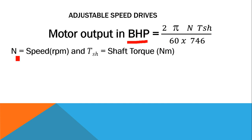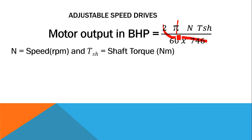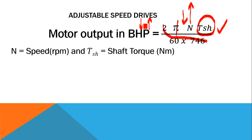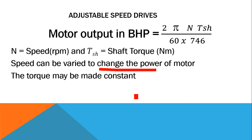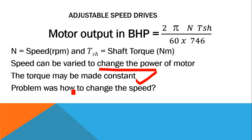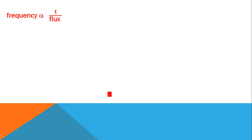In the BHP equation, 2, 60, 746, and π are all constants. So if we control torque to be constant and increase the speed, the BHP will also increase. There is a method where speed can be varied to control the power of the motor. We can control the shaft torque to be constant and vary the speed to change the power of the motor. The synchronous speed equation is N = 120F ÷ P, so the option is to vary the frequency.